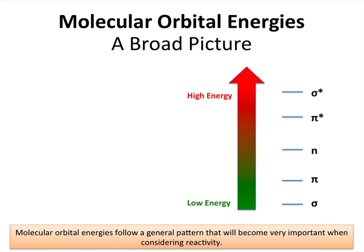Because pi-type overlap is more indirect and weaker than sigma-type or head-on overlap, the energies of the pi- and pi-star orbitals are not quite as extreme as the energies of the sigma and sigma-star. This leads to a broad picture of orbital energies that you see here. The lowest energy or most stable orbitals are sigma-bonds, and these rarely participate in chemical reactions. Pi-bonds much more commonly react, and non-bonding lone pairs as well, as electron donors.